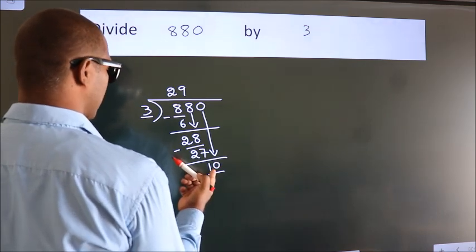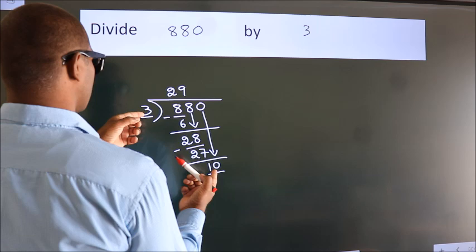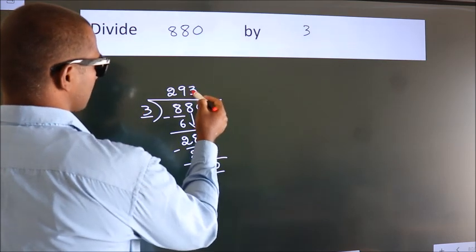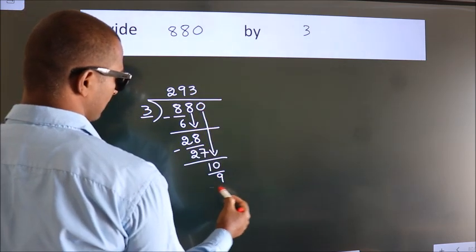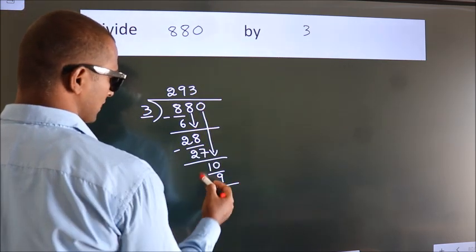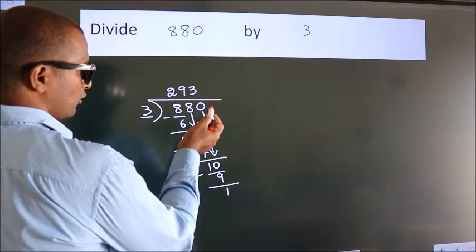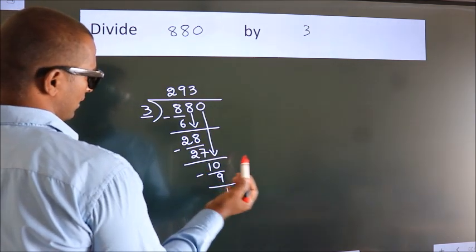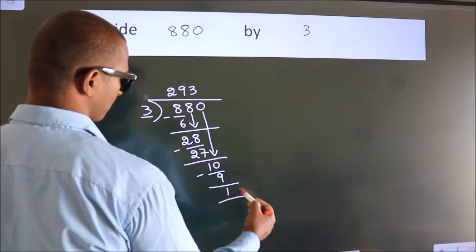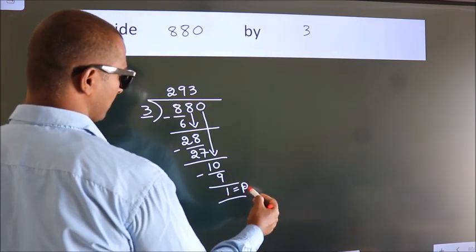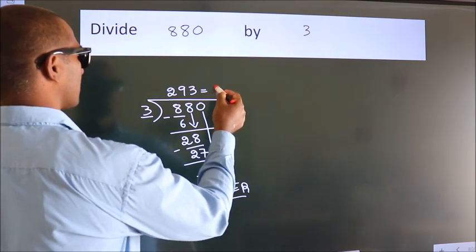A number close to 10 in 3 table is 3 times 3, which is 9. Now, we subtract. We get 1. No more numbers to bring it down. So, we stop here. This is our remainder. This is our quotient.